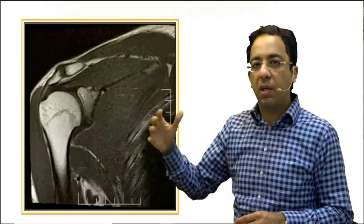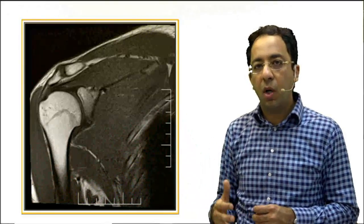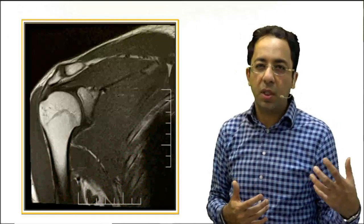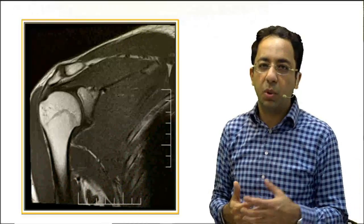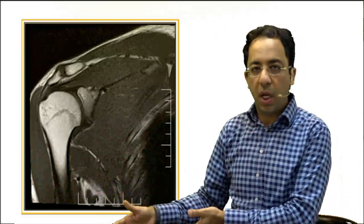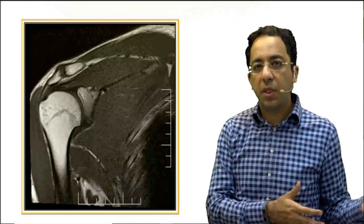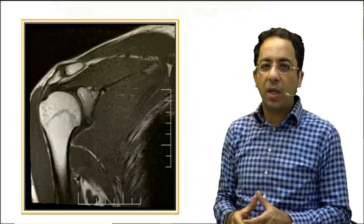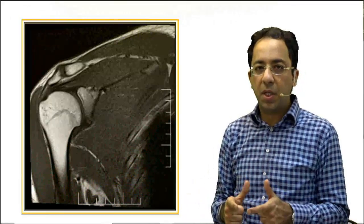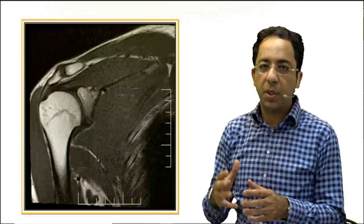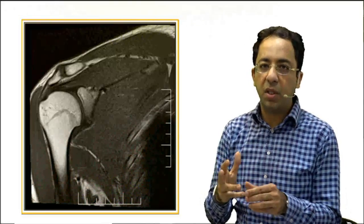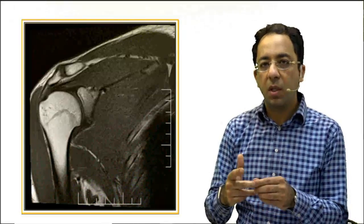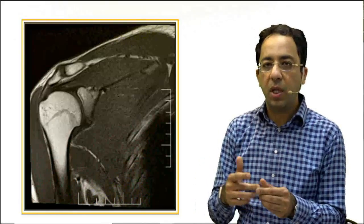We also evaluate the labrum — whether there is a superior or inferior labral tear — and look for signs related to shoulder dislocation, such as the Bankart lesion at the anterior inferior labrum and the Hill-Sachs lesion at the posterosuperior part of the humeral head. Common indications for shoulder MRI include suspected rotator cuff tear, suspected shoulder dislocation, and frozen shoulder.